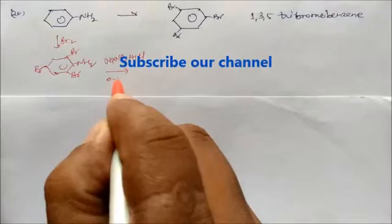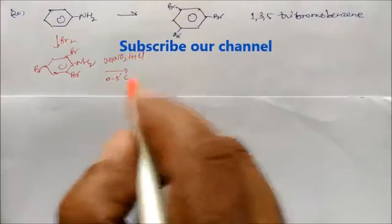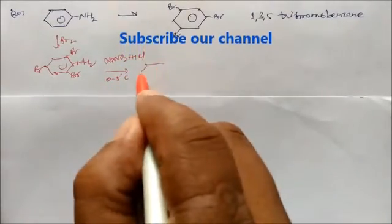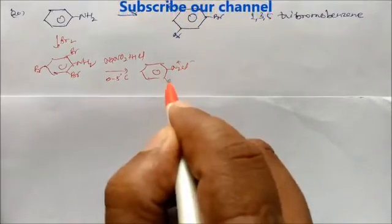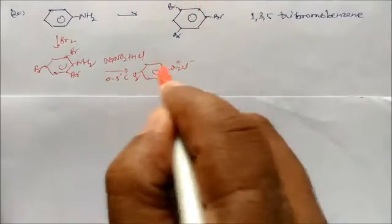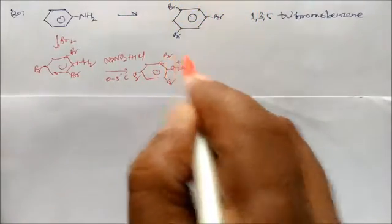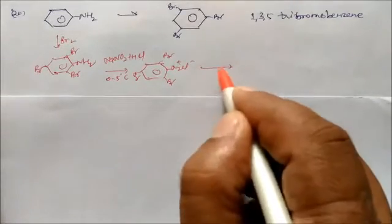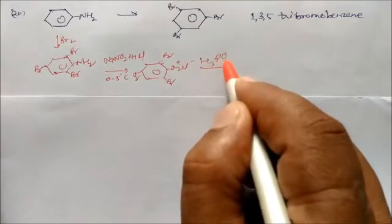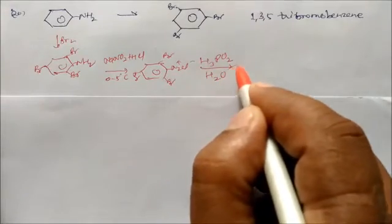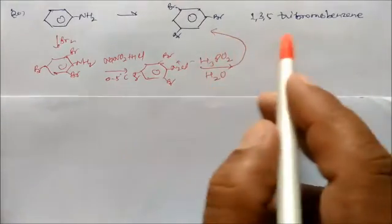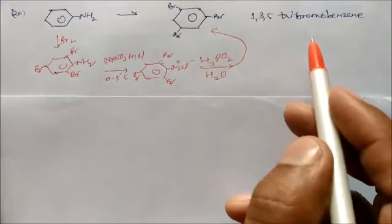Again, give NaNO2 plus HCl at 0 to 5 degrees centigrade — this is the diazotization reaction. It converts to a diazonium salt with Br substituents. Then use H3PO2 with water, and you will get 1,3,5-tribromobenzene.